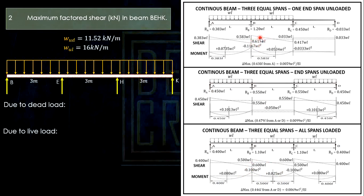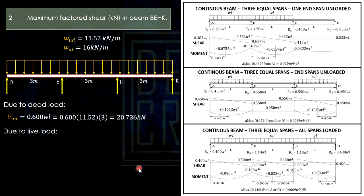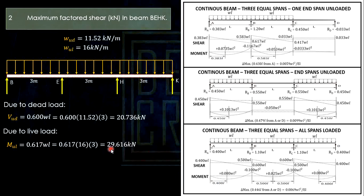For dead load shear: 0.6 × w_DL × L = 0.6 × 11.52 × 3 = 20.736 kN. For live load shear: 0.617 × w_LL × L = 0.617 × 16 × 3 = 29.616 kN. The maximum shear is the sum of these two values.